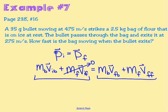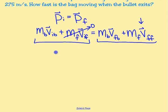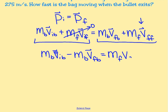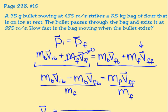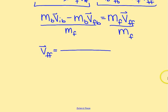We're looking for how fast the bag of flour is moving after the bullet exits, so we solve for that quantity. Rearranging: mass of bullet times V-initial of bullet minus mass of bullet times V-final of bullet equals mass of flour times V-final of flour. Dividing both sides by mass of flour gives us V-final of flour. The mass of the bullet is 35 grams, which we convert to 0.035 kilograms.